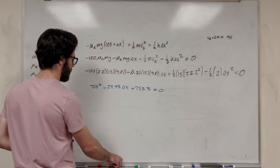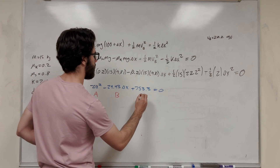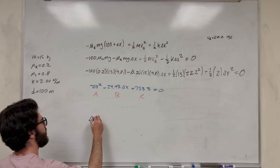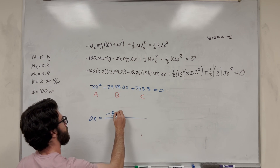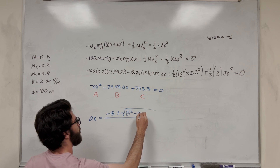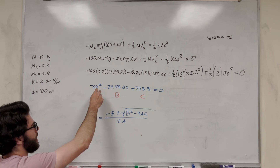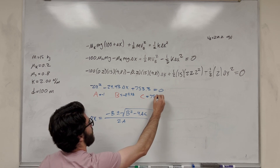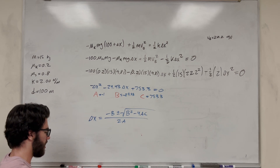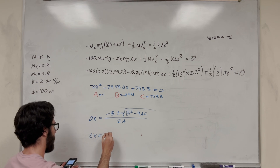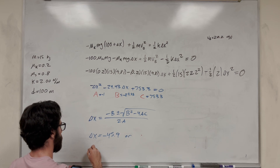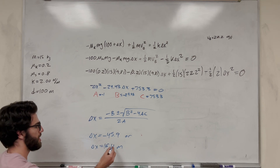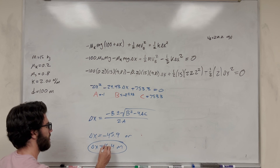We've matched the quadratic form. With A = negative 1, B = negative 29.43, and C = 753.3, we apply the quadratic formula: delta X equals negative B plus or minus square root of B squared minus 4AC, all over 2A. We get two values: negative 45.9 or 16.4. Since negative compression is physically impossible, the spring compresses 16.4 meters. That's our answer to part B.